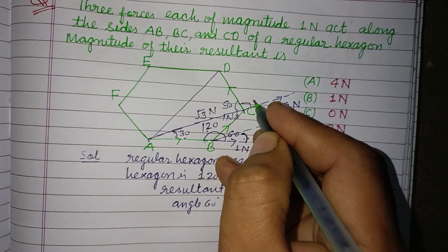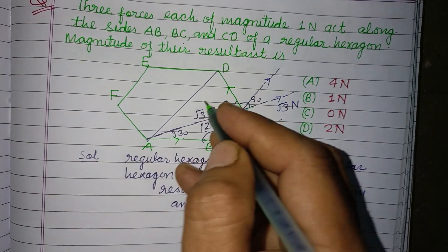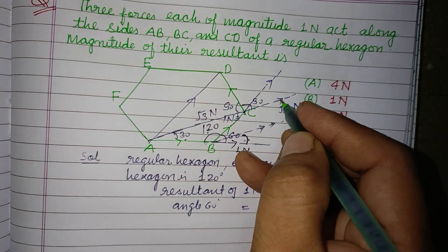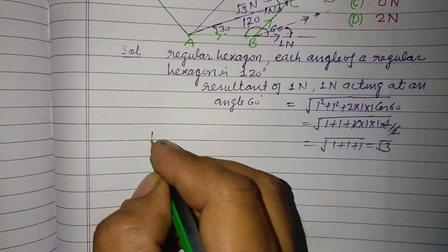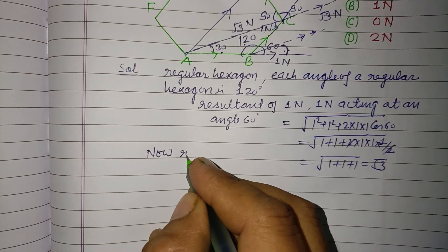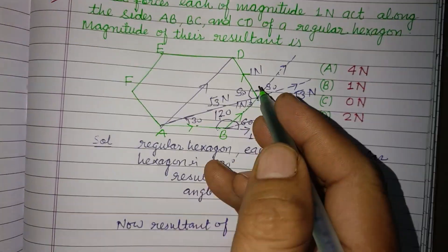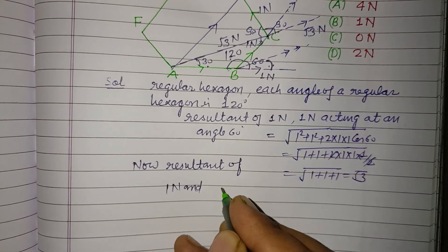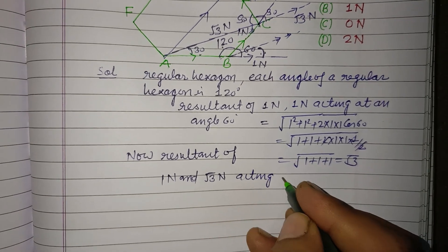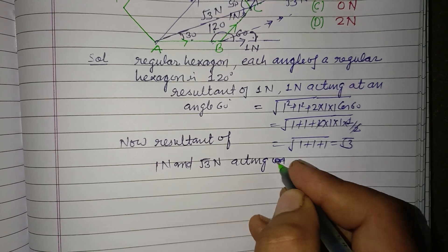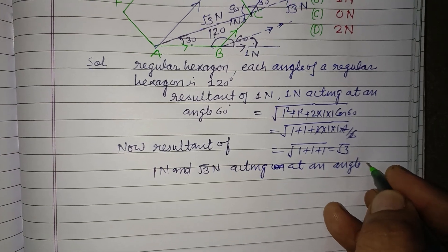So if this angle 90, then this angle also 90 and their resultant is this which is parallel to this. So this is root 3 N and this is 1 N. Now resultant of 1 N and root 3 N acting at an angle 90.